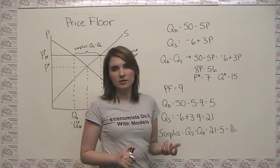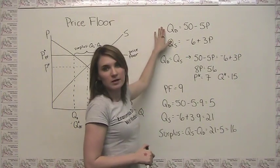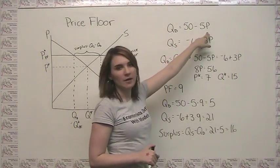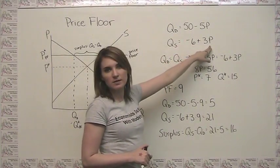Let's go through an example with some numbers here. Let's consider a demand curve where quantity demanded is equal to 50 minus 5p, and a supply curve where quantity supplied is equal to negative 6 plus 3p.